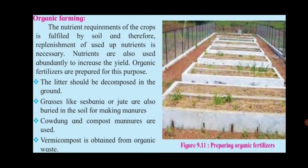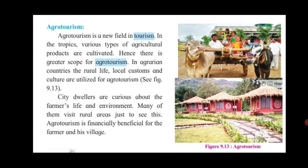Next, we shall learn about organic farming. The nutrient requirements of crops are fulfilled by soil, and replenishment of used-up nutrients is necessary. Organic fertilizers are prepared for this purpose — litter is decomposed in the ground, grasses like sesbania or jute are buried in the soil, and cow dung and compost manures are used. Vermicompost is obtained from organic waste. When farming is done using all natural waste matter mixed in the soil, it is called organic farming. Organic pesticides like neem can be used for controlling pests. The crop obtained from organic farming is high in quality, and chemical fertilizers and pesticides are not used.